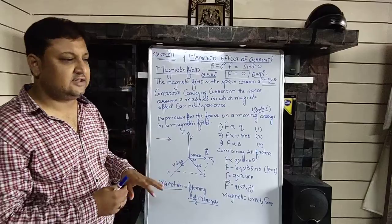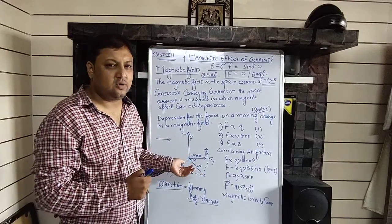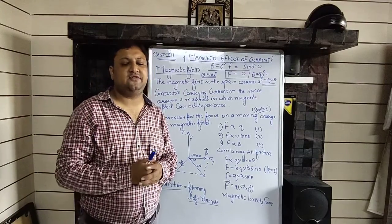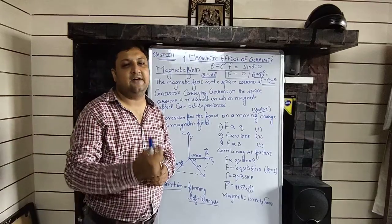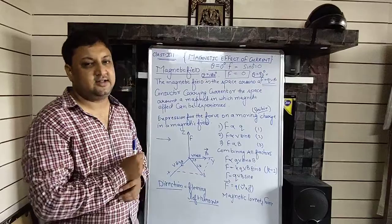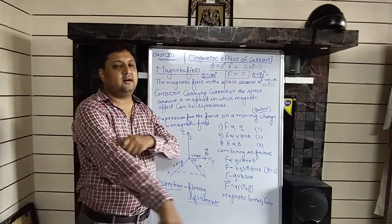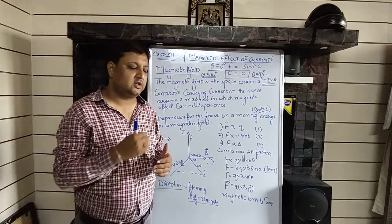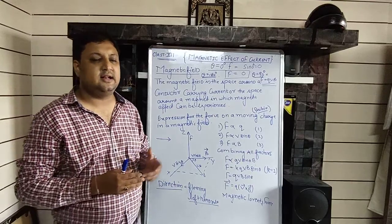When a positive charge moves in a magnetic field and experiences a force, how do we find the direction of that force? For this, we have a rule called Fleming's Left Hand Rule, which you studied well in 10th standard in this same chapter. To find the direction of the force on a charge due to a magnetic field, we use Fleming's Left Hand Rule.